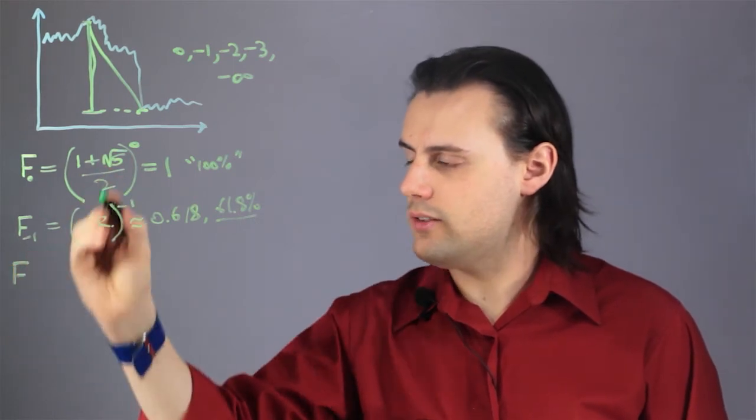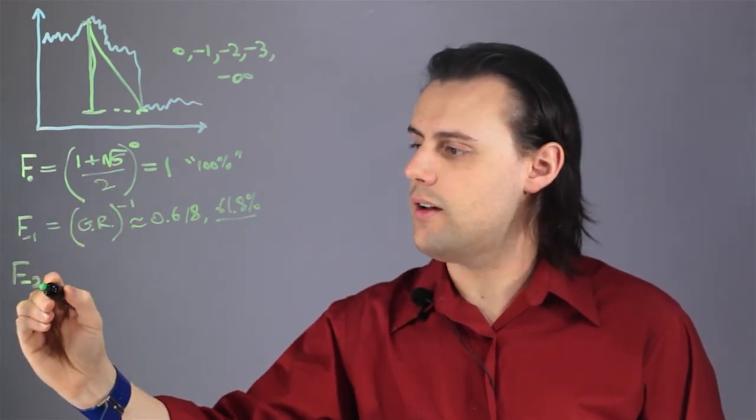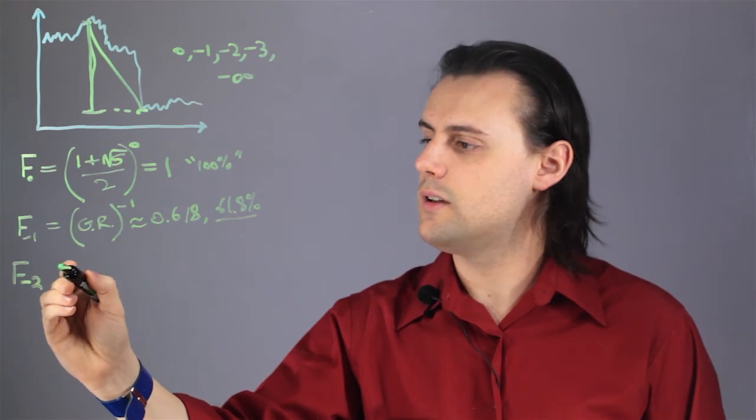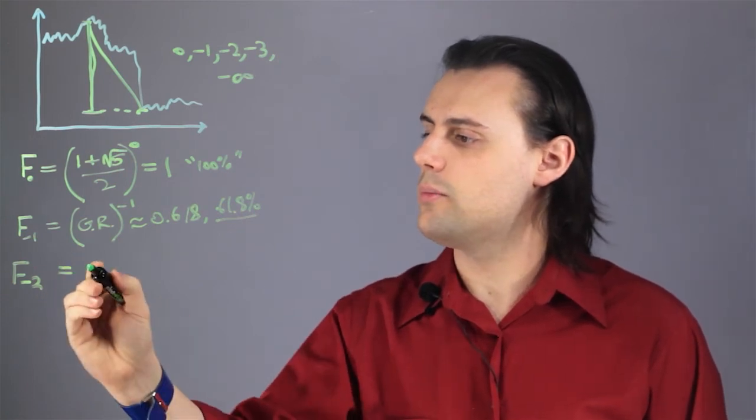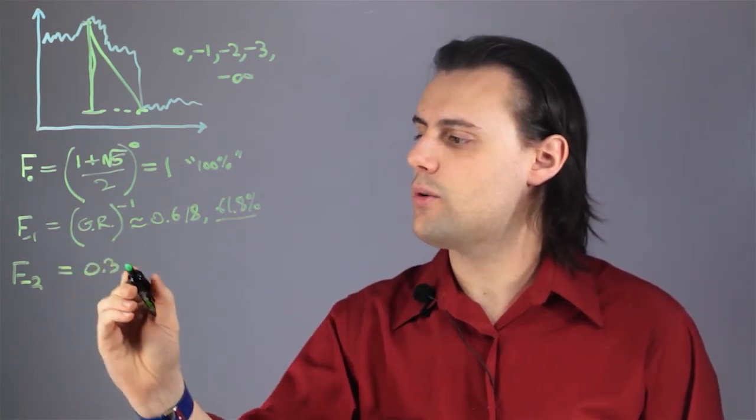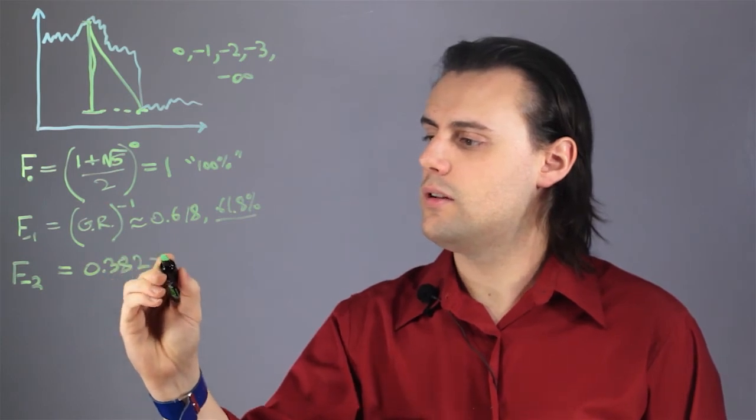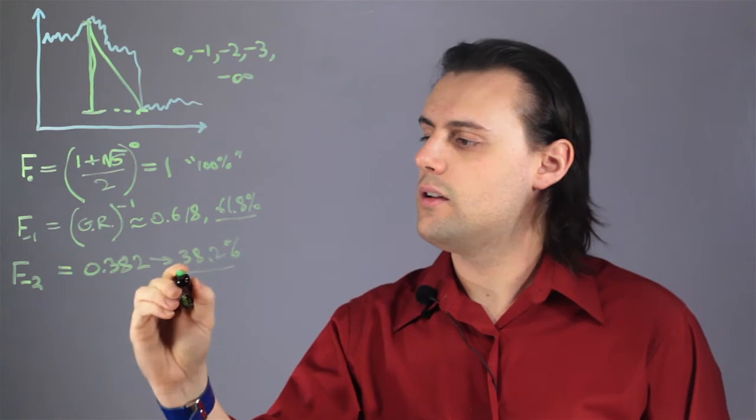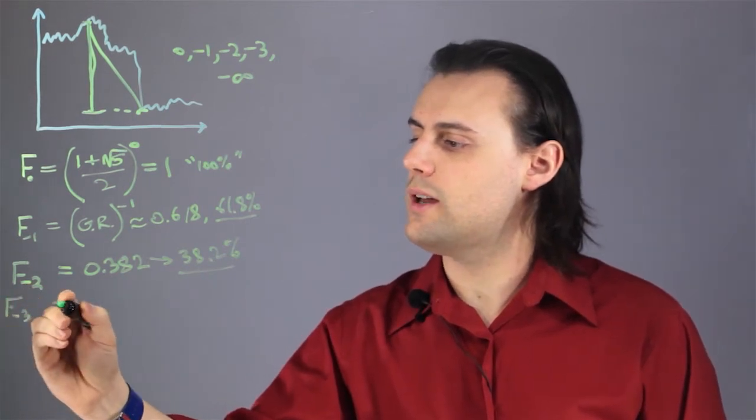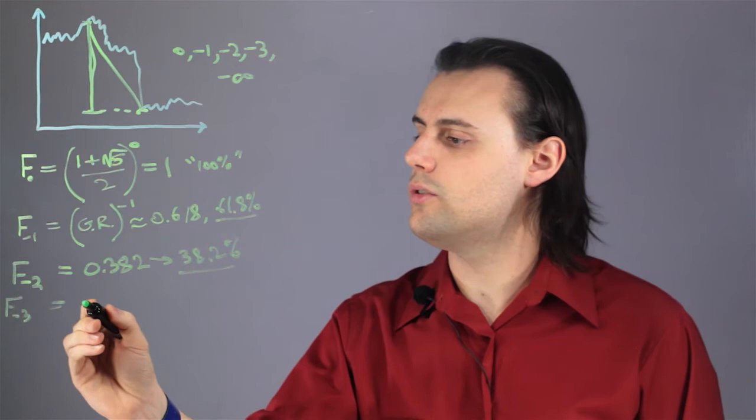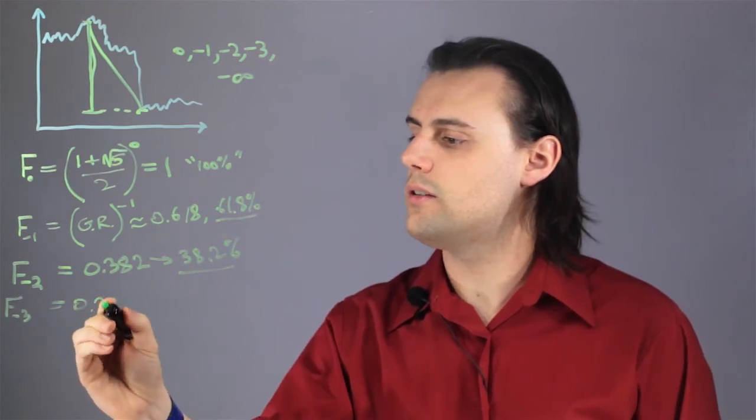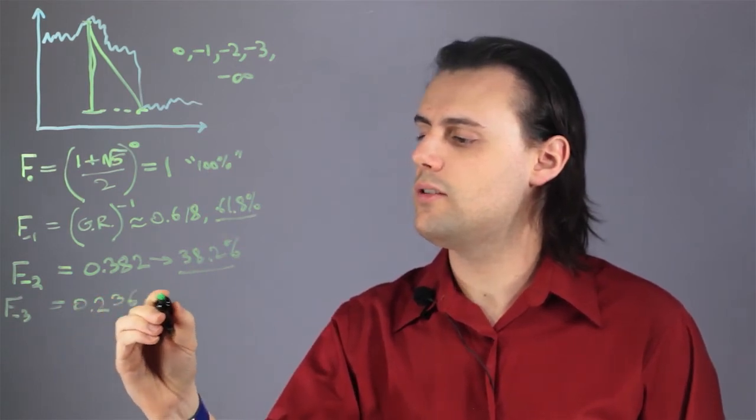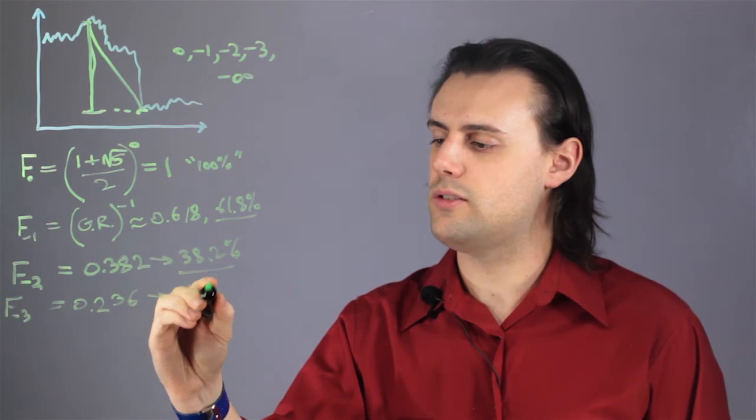Likewise, we use the same formula, and F sub negative 2 is going to be equal approximately to 0.382, or 38.2%. And F sub negative 3 is going to be equal to 0.236, or 23.6%.